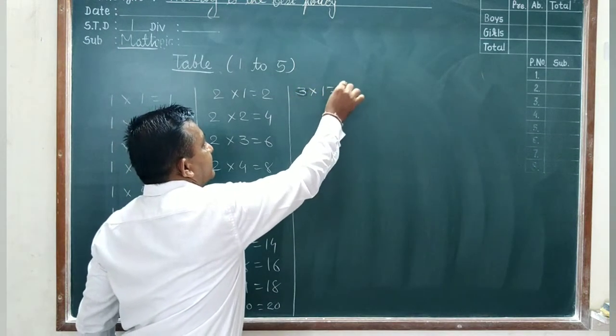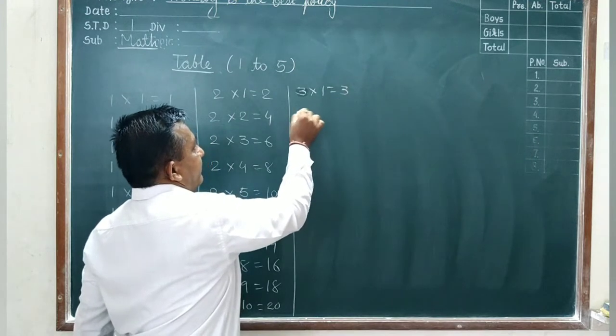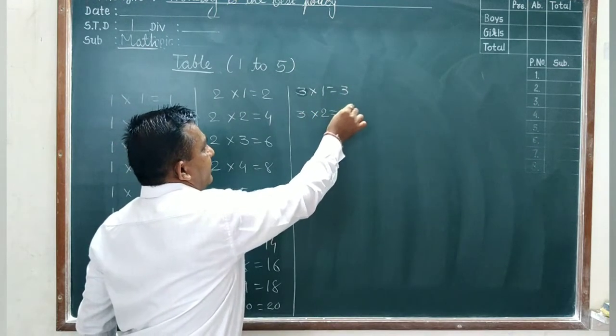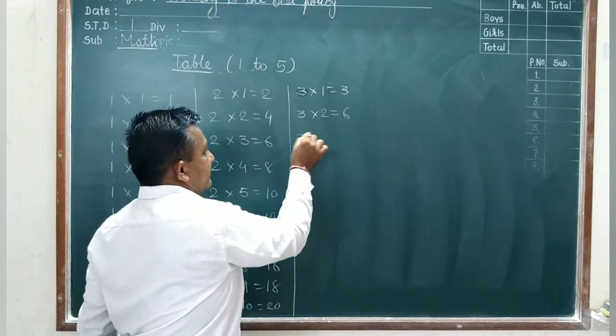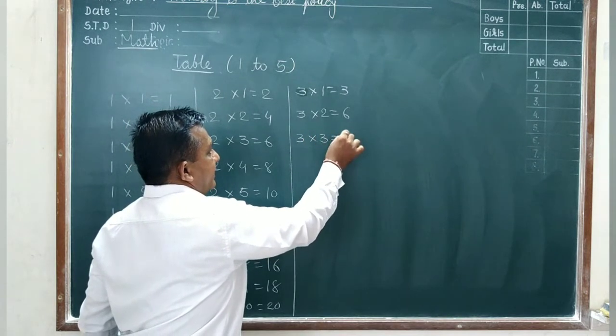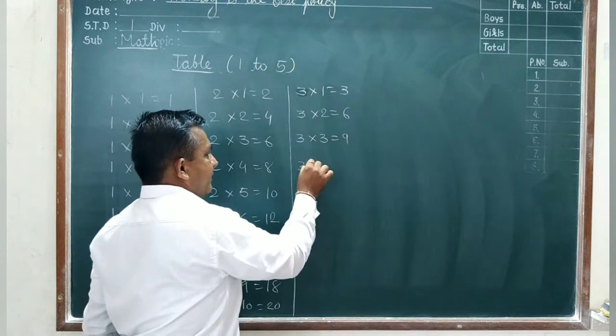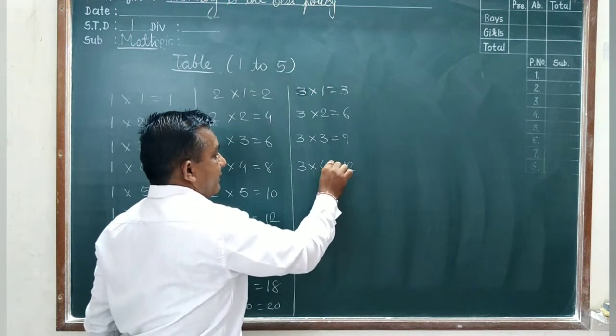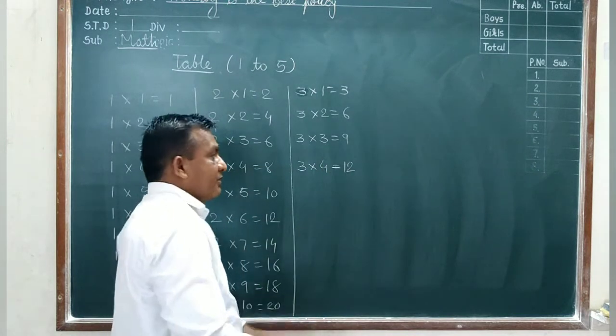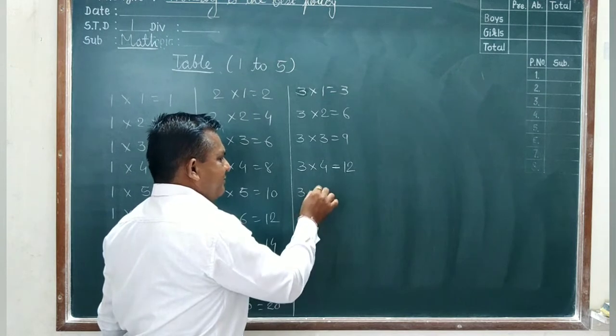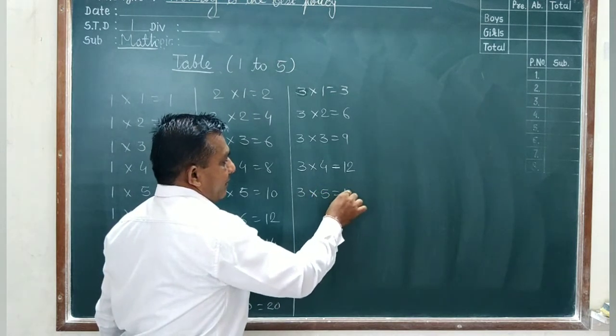Now table 3: 3 ones are 3, 3 twos are 6, 3 threes are 9, 3 fours are 12, and 3 fives are 15.